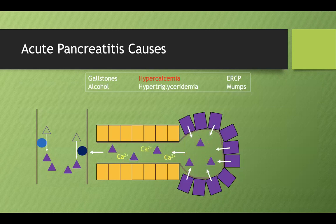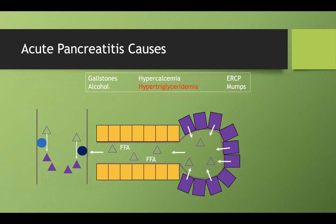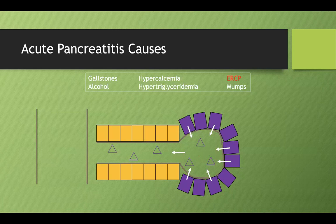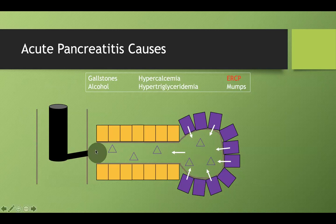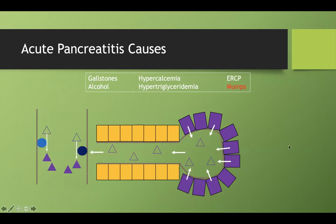In gallstone pancreatitis, a gallstone lodges where the common bile duct meets the main pancreatic duct, blocking it and allowing trypsinogen to activate over time. Alcohol increases pancreatic enzyme secretion and causes inflammation — it's the second most common cause. Hypercalcemia activates trypsinogen directly. Hypertriglyceridemia produces free fatty acids that independently damage the pancreas. In ERCP, the mechanical procedure of dislodging a gallstone can itself trigger pancreatitis.